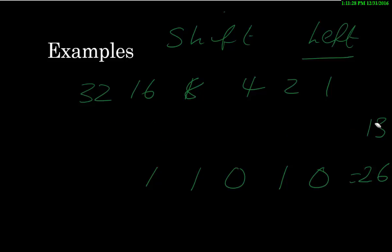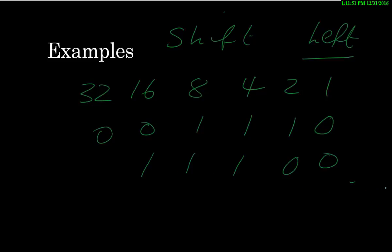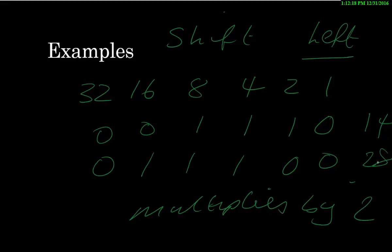Let me do a cleaner example to confirm. A left shift multiplies by two. Taking the value 14: a left shift should give us 28. Indeed, 16 plus 8 is 24, plus 4 is 28. Hopefully you can see that a left shift multiplies the original number by two. So left shift does multiplication.